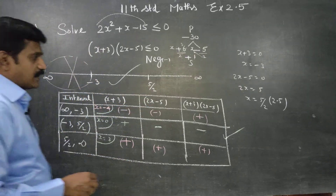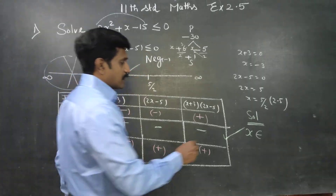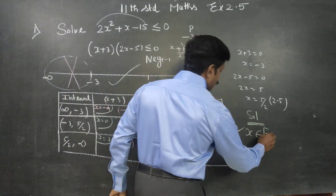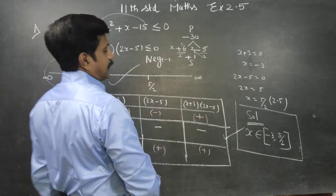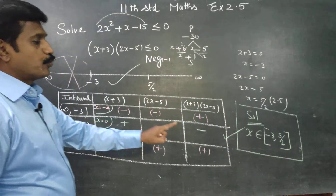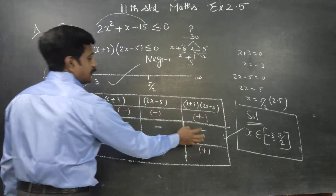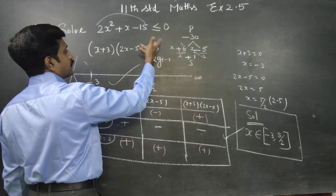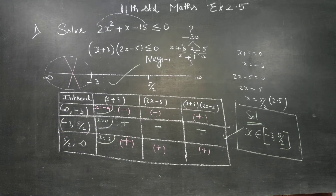Therefore, the solution for this sum is x belongs to [−3, 5/2], with equal-to symbols (closed interval). This is my answer, this is my solution. If you can do it as an open interval, you can do so. Thank you.